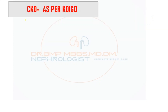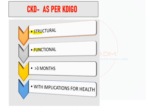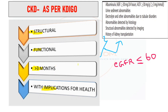Chronic kidney disease is defined as the structural or functional abnormality of the kidney persisting for more than three months with implications for health. The functional abnormality cutoff is eGFR less than or equal to 60. Structural abnormalities include any imaging findings such as scarring, a unilateral kidney, or a shrunken kidney with size less than 9 centimeters.